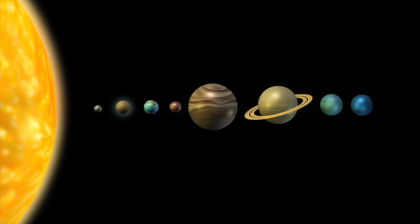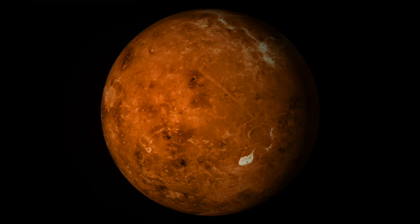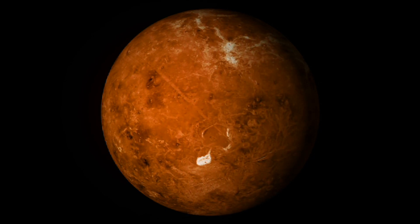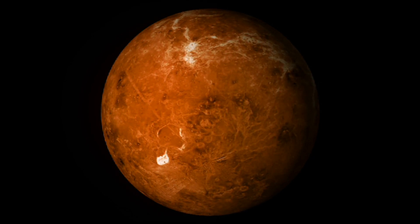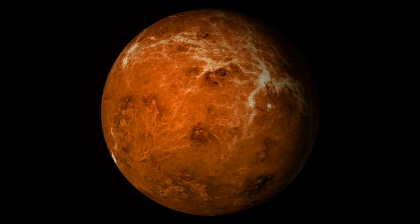Venus is the second planet from the sun. Clouds cover the whole surface of Venus. They let sunlight in, but do not let heat out. This makes Venus very, very hot.